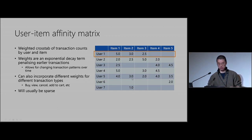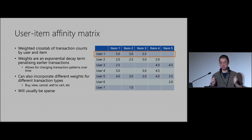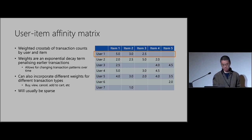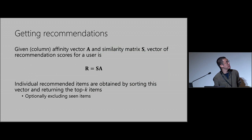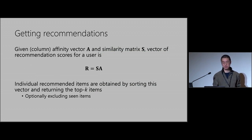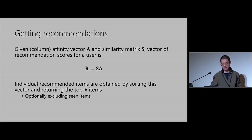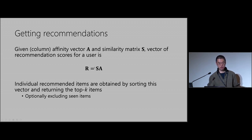Another key feature is that the affinity matrix is going to be sparse — you may have 10,000 types of items in your catalog, but a particular user is not going to buy all 10,000. To get a recommendation, all you essentially do is multiply those two entities together: given a column affinity vector and a similarity matrix, the vector of recommendation scores for a user is just r = S × a.